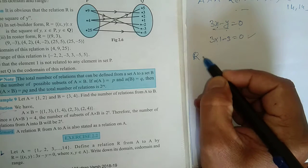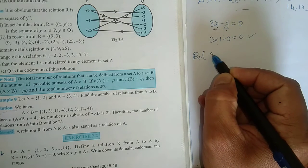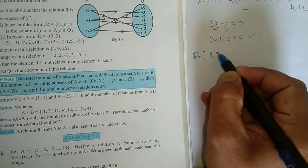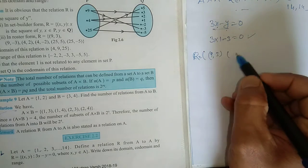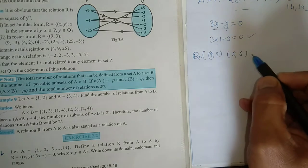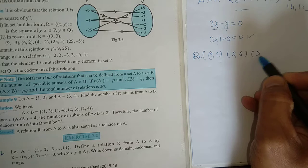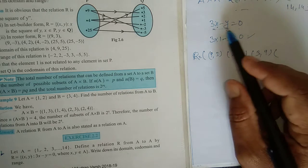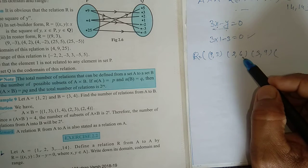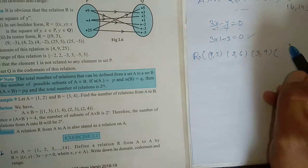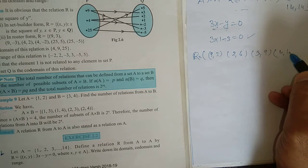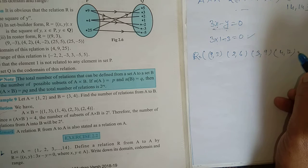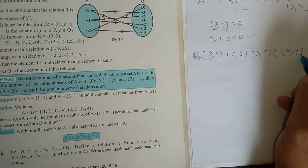The elements in R that satisfy 3x minus y equals 0 are: (1,3), (2,6), (3,9), (4,12). The pair (5,15) cannot be included because 15 does not belong to set A, so the relation ends at (4,12).